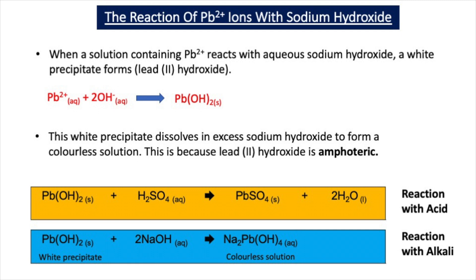Lead-2 hydroxide is a metal hydroxide, so we know it reacts with acid to form a salt and water. The chemical equation is: Pb(OH)₂(s) + H₂SO₄(aq) → PbSO₄(s) + 2H₂O(l).